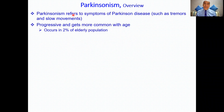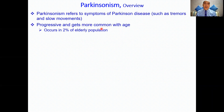Parkinsonism refers to symptoms of Parkinson's disease, which includes tremors, rigidity, and slow movements. It's progressive and gets more common with age. As you age, your probability of getting Parkinsonism increases, and it occurs in about 2% of the elderly population.